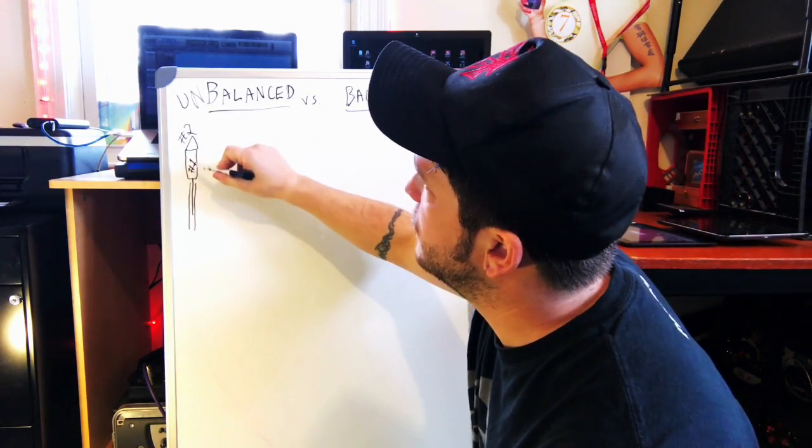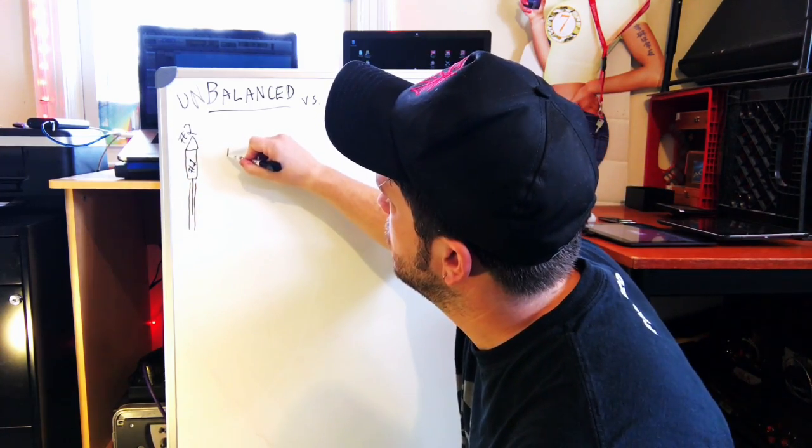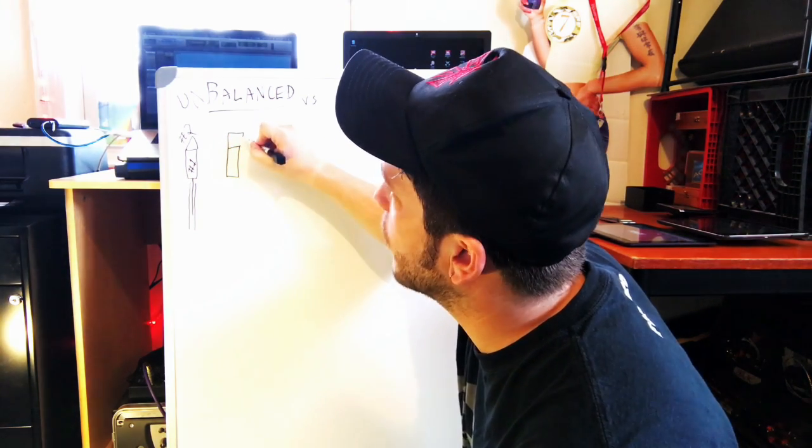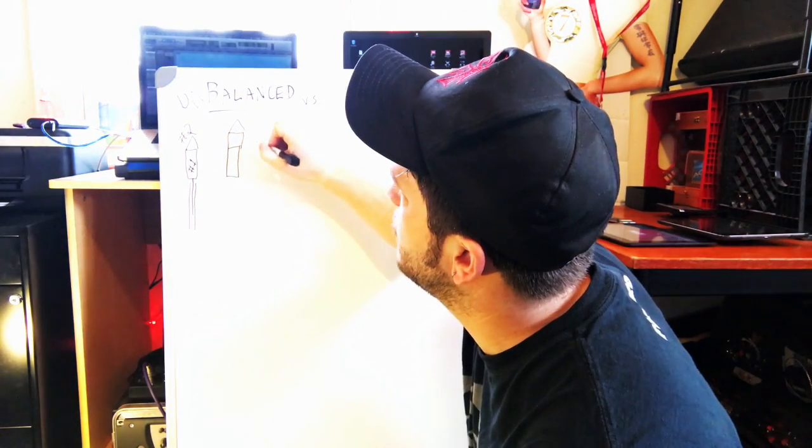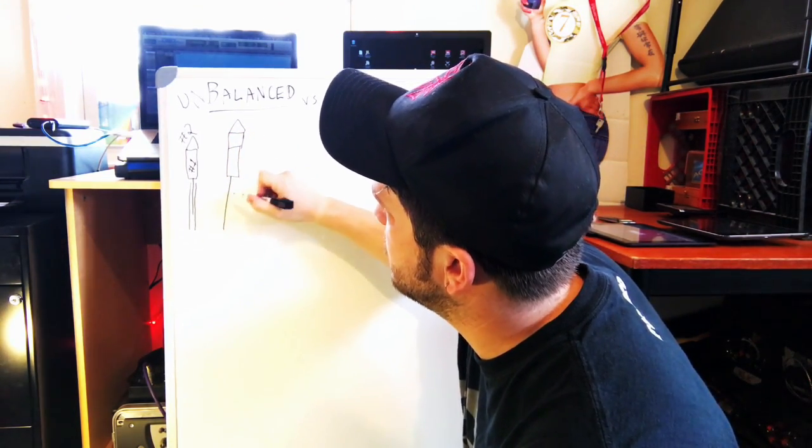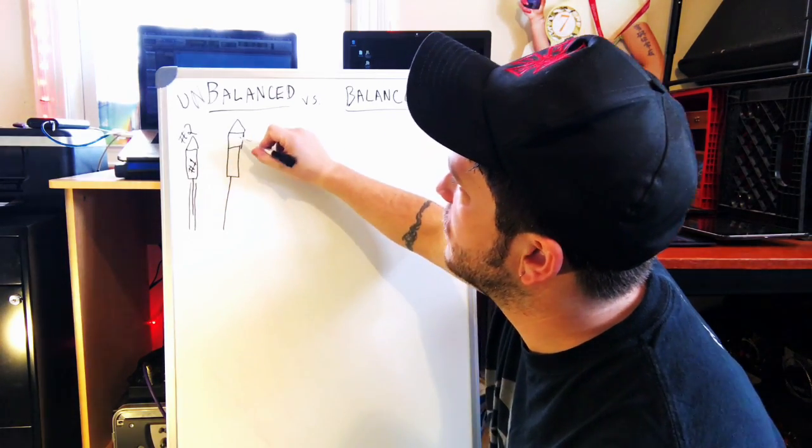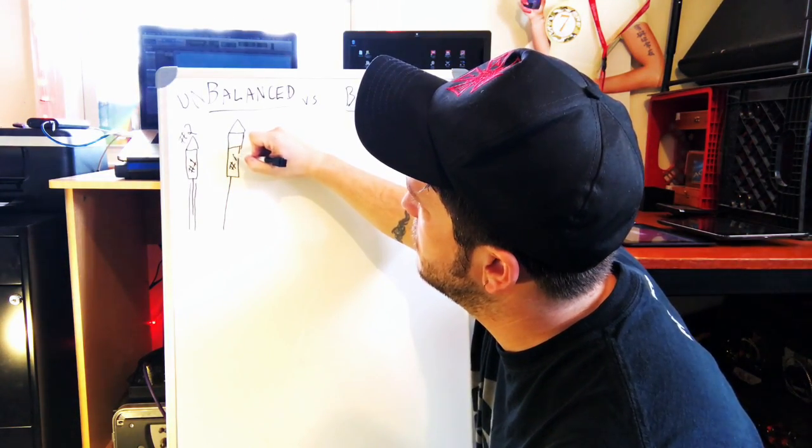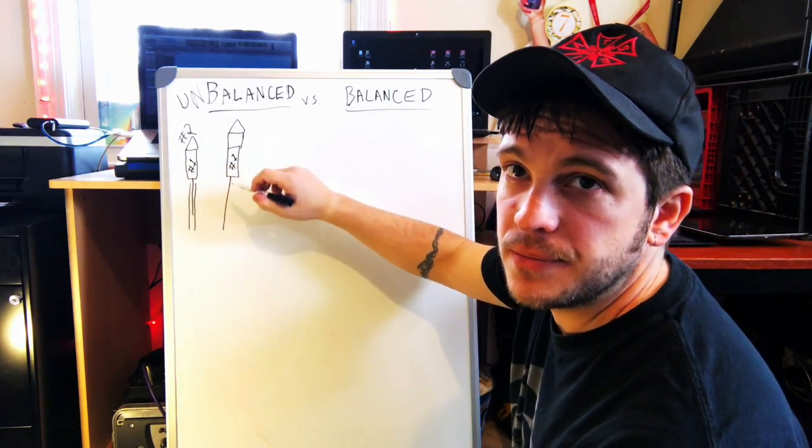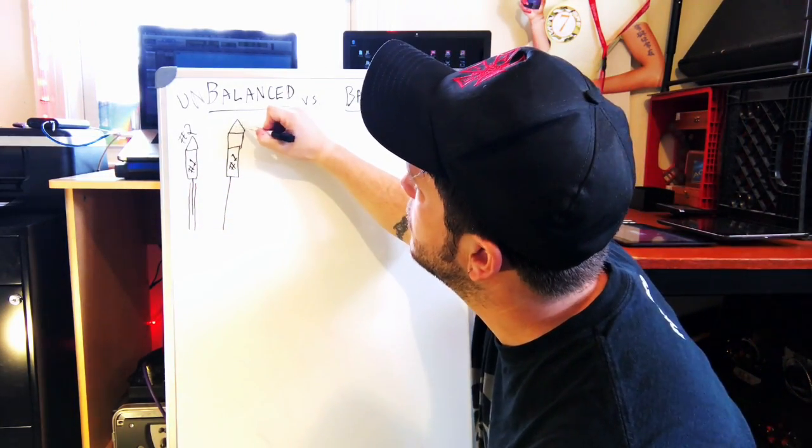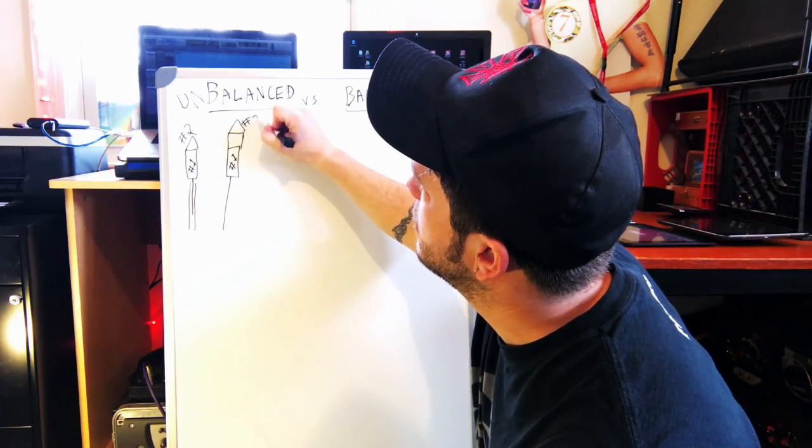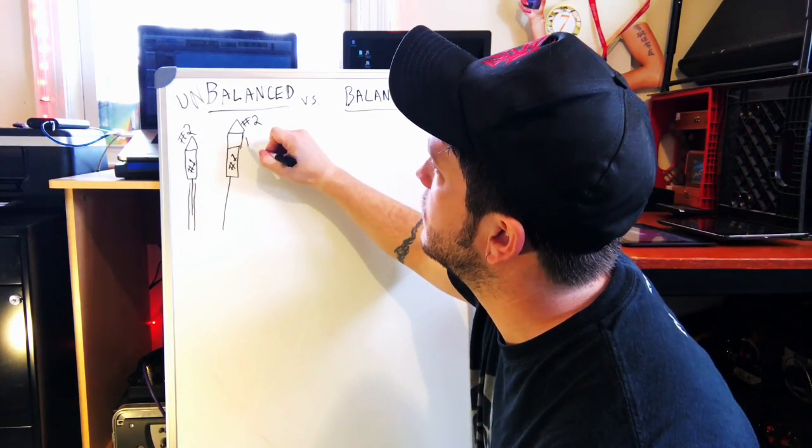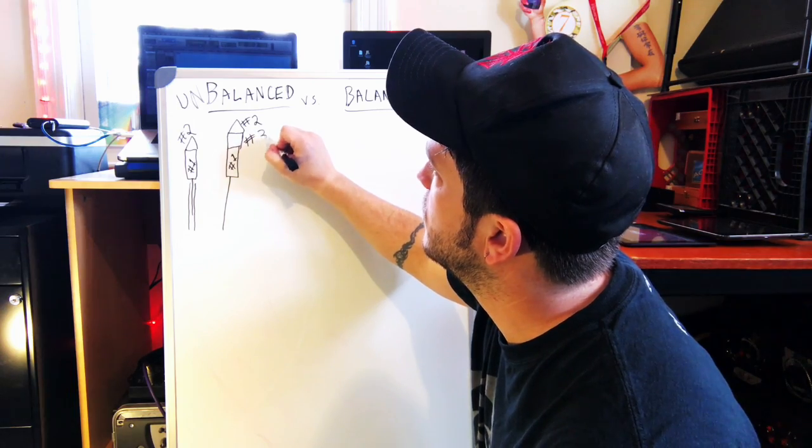Instead of just pins one and two, it's what we call a TRS, instead of a TS, which stands for tip, ring, and sleeve. Here's the sleeve, here's the ring, here's the tip. Sleeve is still number one, the shield. The tip is still pin number two. So, the ring is the third pin, pin number three.